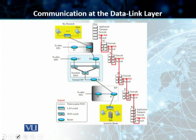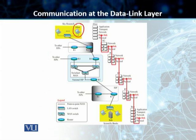We have discussed this example before, but that was in the context of introducing the physical layer. Now we are talking about the logical communication happening at the data link layer. In this particular case, we have the sender — Alice's machine — which is connected directly to router R2. The data link layer at Alice's computer communicates with the data link layer at router R2.